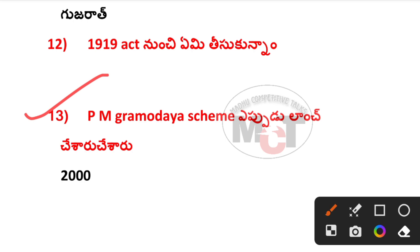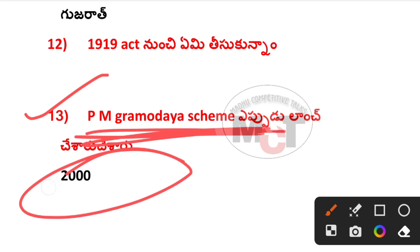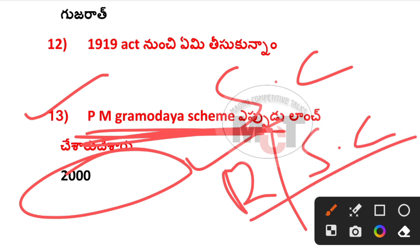This is the scheme of PM Gramo Deya Scheme, which was launched in 2012. This is a central scheme of states. This is the state scheme — these are schemes discussed in every shift.